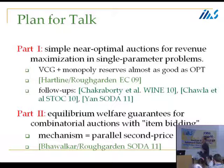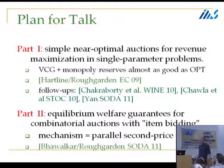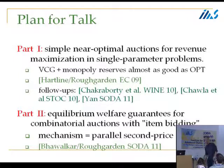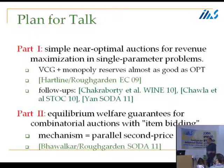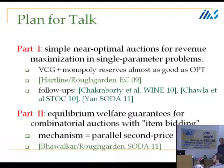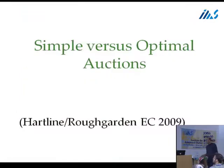We'll give affirmative answers: yes, really all you need is welfare maximization supplemented with simple reserve prices, and we'll have provable performance guarantees for that mechanism. The second part will be more recent work with Shuchi Chawla, which is in SODA '11. Shuchi is right there. This also has a follow-up paper that Noam talked about on Tuesday — that's an EC '11 paper. In our work, we think about a combinatorial auction where for a modest number of goods, direct revelation is out of the question.